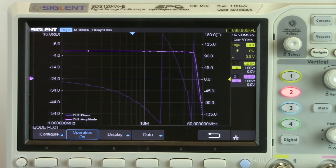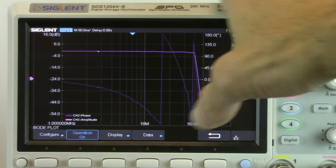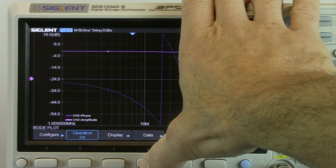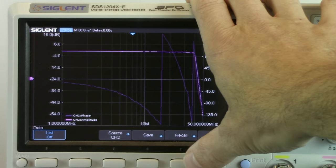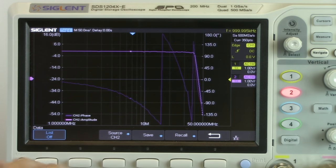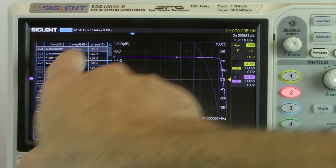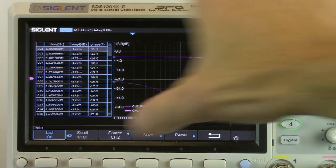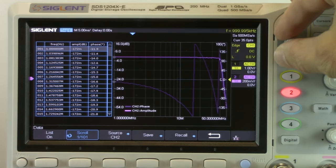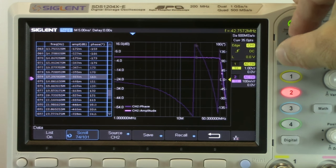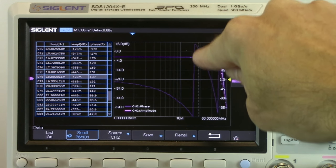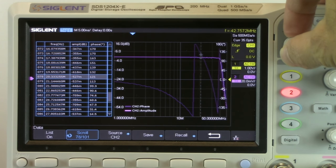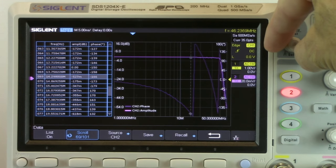We can also take a closer look at the data. So we can go over to data and we can go to list. The list is going to give us a full list of all of the values that we've collected. So it has the frequency, it has the amplitude, and it has the phase measurement at each one of those individual points. We can select scroll and then we can scroll through each individual line and each individual value. And you can see that the point that we're looking at is indicated by these gray cursors in both the amplitude and the phase scale.